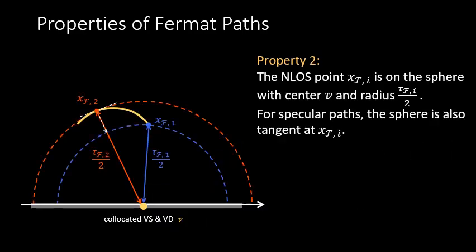By knowing the length of the Fermat path, we know that the corresponding point of the non-line-of-sight surface will be on a sphere, with center at the virtual source and radius equal to half the length of the Fermat path. If the Fermat path is a specular path, then this sphere will additionally be tangent to the non-line-of-sight surface.